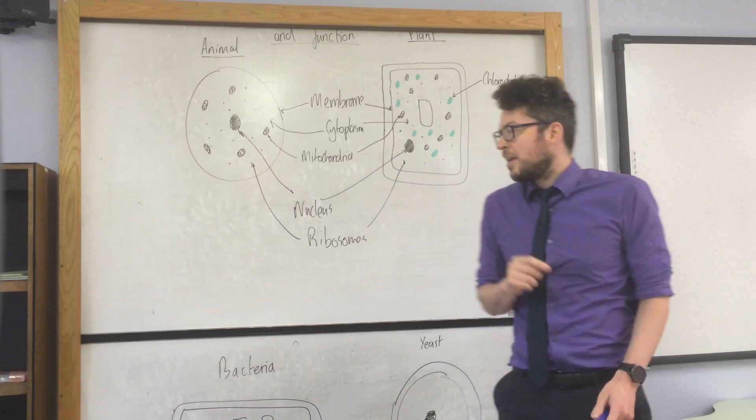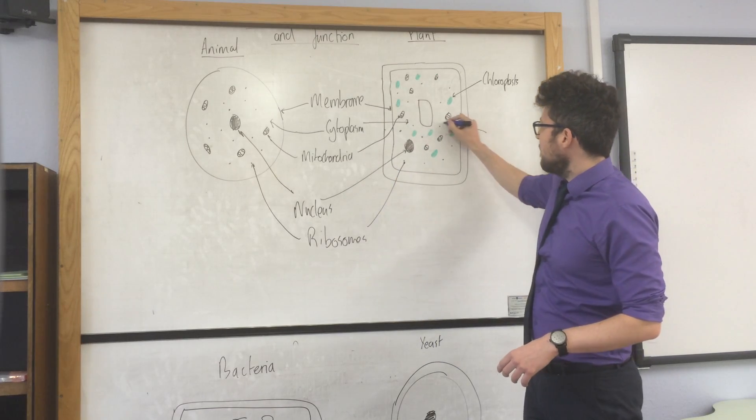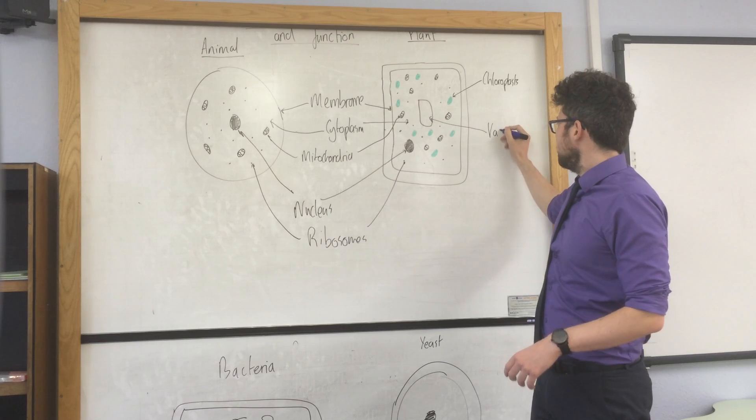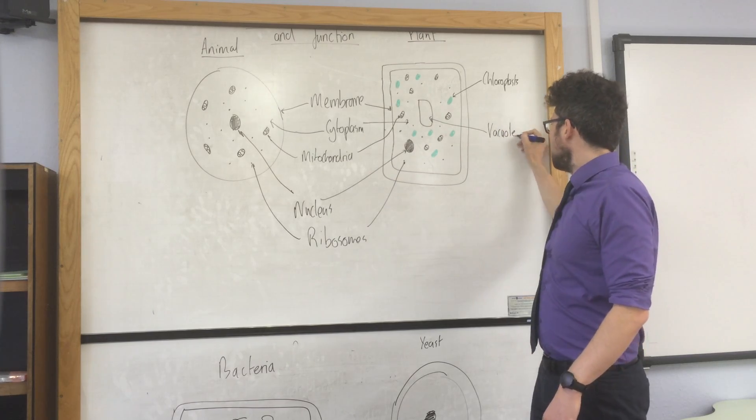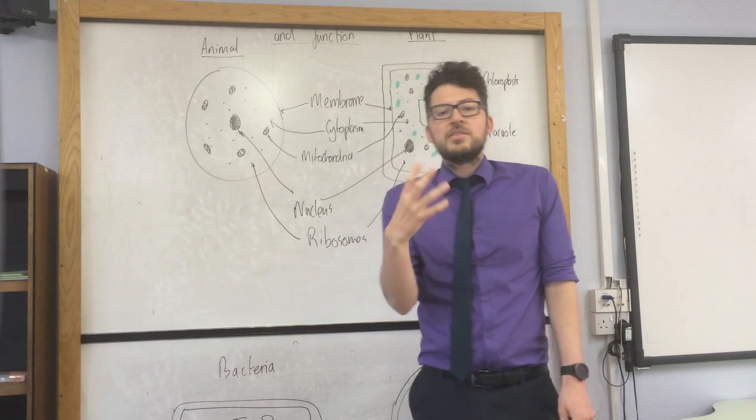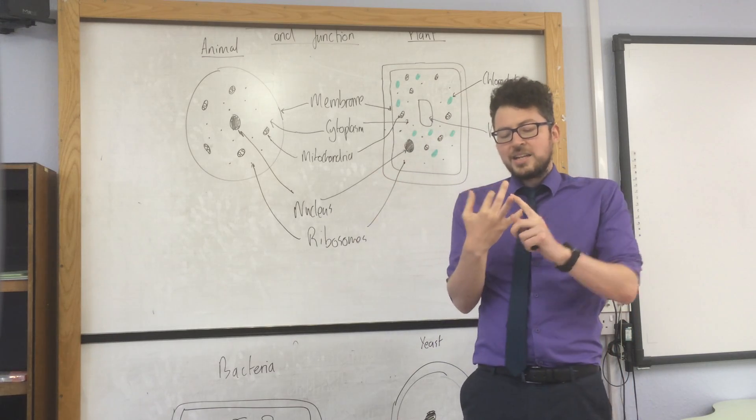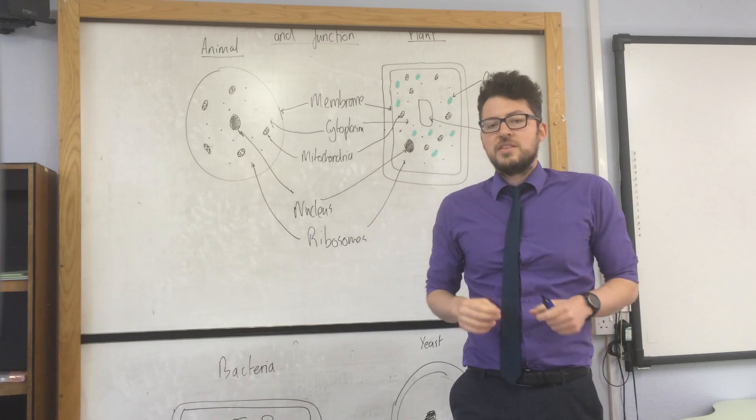They also have vacuole. Vacuole is filled with cell sap, which can be a store of food. It can also provide rigidity for the cell.